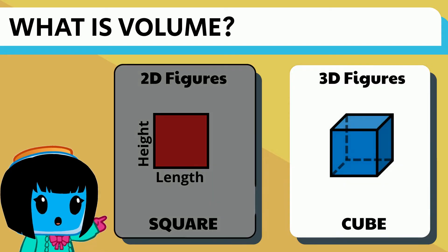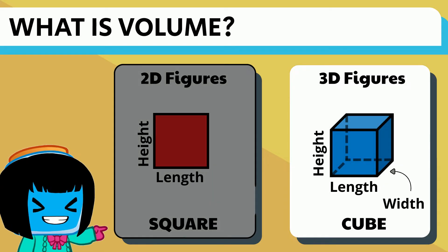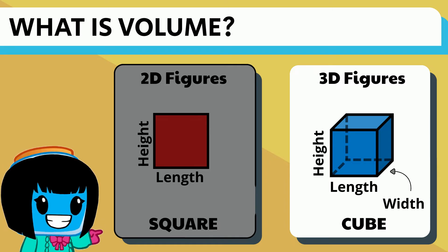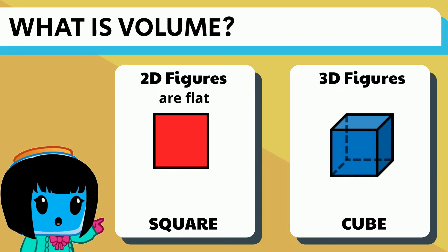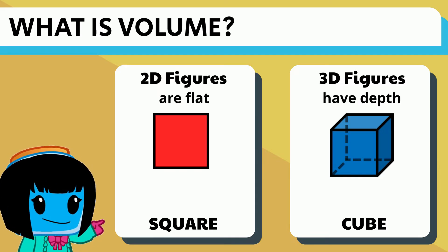A cube is three-dimensional because it has three dimensions, height, length, and width. The two figures are different because the square is flat, whereas the cube has something we call depth.